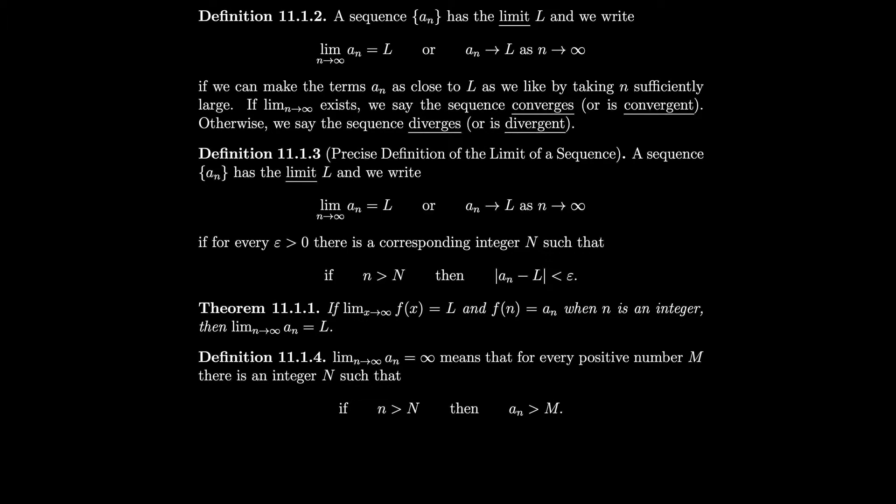So you can say: I want you to get within five of the limit, and we'll say fine — just look at the sequence far enough along and it'll be close enough. Far enough along means we can actually find some N. If the limit of a function f(x) is L and f(n) = an, then the limit of an equals that same limit L. But be careful — very often sequences don't have a corresponding function over real numbers.